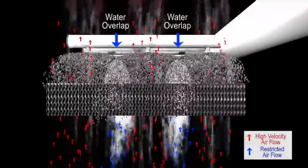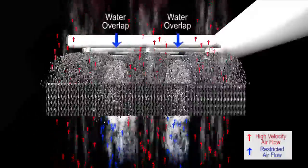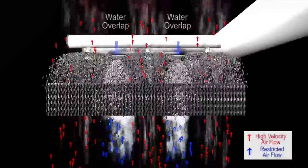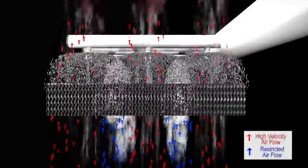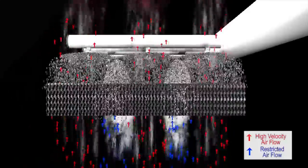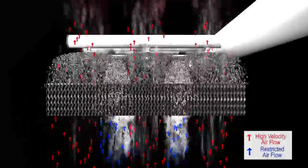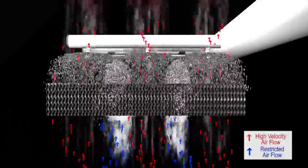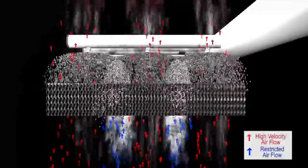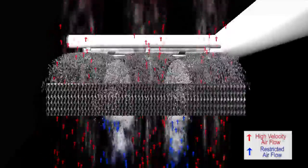The restrictions caused by the overlap cause the remaining air volume to be forced into areas where the water loading is light. Both the volume of air and the velocity will increase in these areas. The red arrows depict the accelerating airflow exiting the film media at high velocities. A gross waste of fan energy.